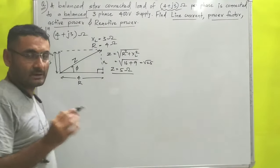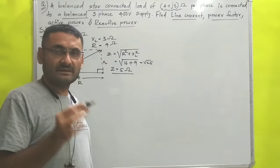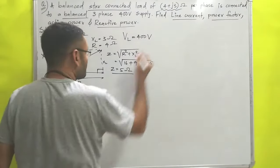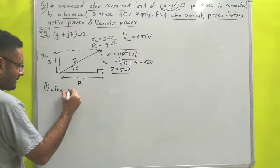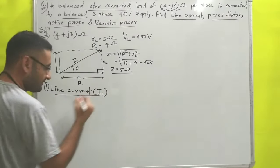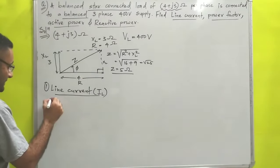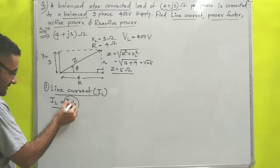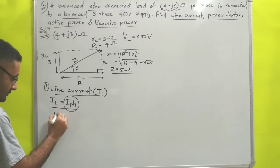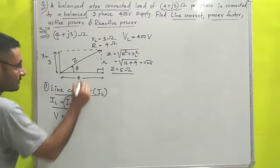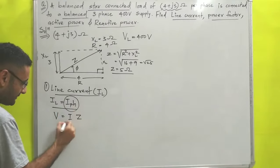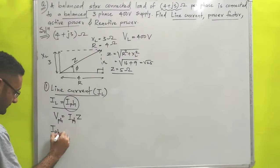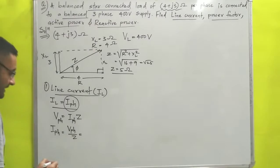The 400-volt supply is the line voltage VL. For a star connection, the relation between line voltage and phase voltage is VL = √3 · Vph, so Vph = VL / √3. We apply Ohm's law using impedance: Vph = Iph × Z, therefore Iph = Vph / Z.